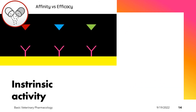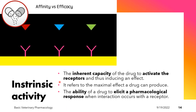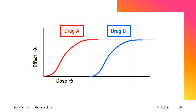The second requirement for drug activity is intrinsic activity, or efficacy. This is defined as the inherent capacity of the drug to activate receptors and induce an effect. It also refers to the maximal effect a drug can produce, and the ability of the drug to elicit a pharmacological response upon interaction with the receptor. A dose-response curve of two drugs, A and B, illustrates this: the y-axis represents the drug effect, the x-axis represents the dose, and the highest point on the vertical axis represents the maximum effect.